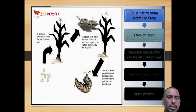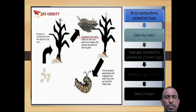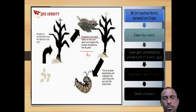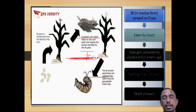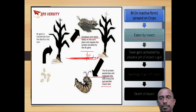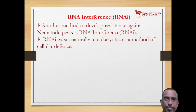Here you can see how the Bt gene is transferred into corn. Whenever the European corn borer feeds on the corn plant and digests the protein, the Bt gene produces a toxic protein which gets activated at alkaline pH, leading to collapse of the gut and death of the insect. Bt is in inactive form when sprayed on crops, is eaten by the insect, toxin gets activated by alkaline pH, causing swelling of gut and death.